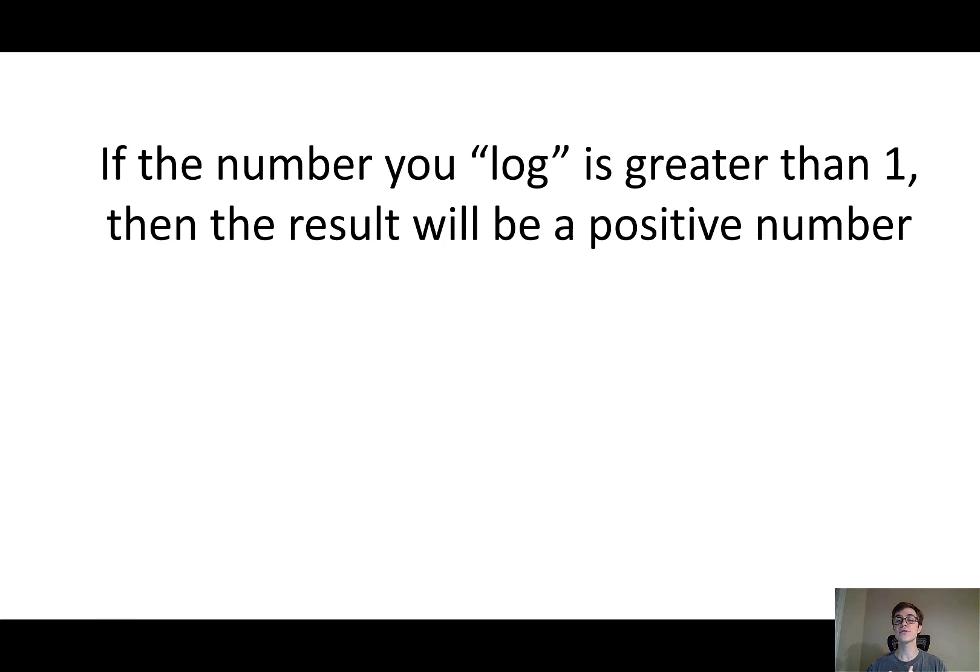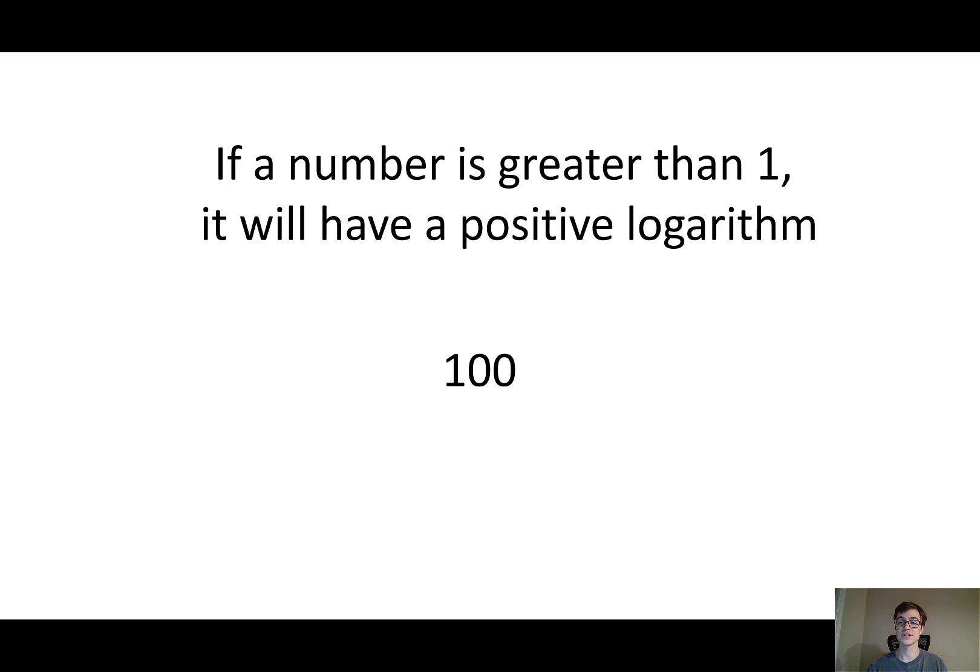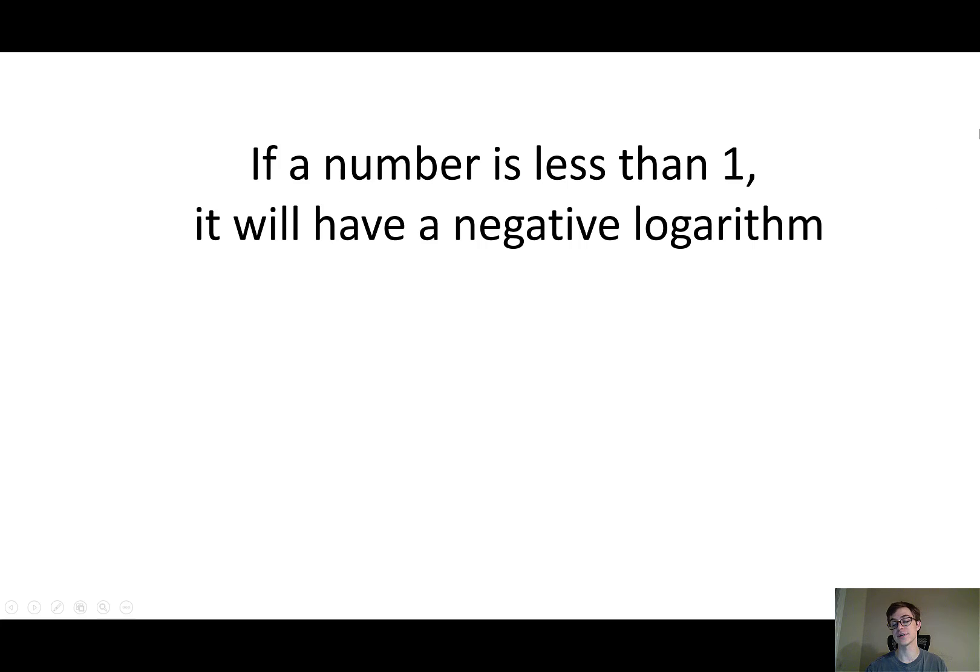Now, if the number that you logarithmize is greater than 1, then you're going to get a positive number. So, for example, 100. That's 10 to the 2, and this is a positive number, so I'm going to get a positive logarithm. If the number's less than 1, I'll get a negative logarithm, though. So, for example, 0.01, that's 10 to the negative 2, and if I take the logarithm of this side, I'm going to get negative 2.